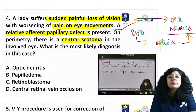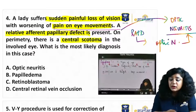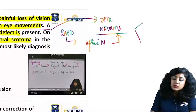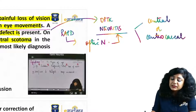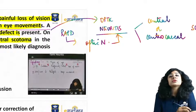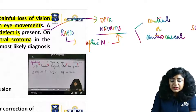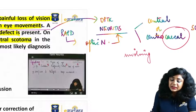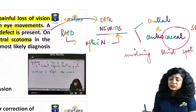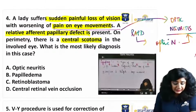You can confirm it from the perimetry findings, because in cases of optic neuritis you get either a central scotoma or a centrocecal scotoma. What does 'cecal' mean here? It means involving the blind spot. So if the scotoma involves the blind spot, it is centrocecal.